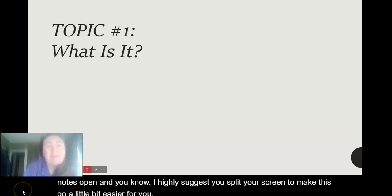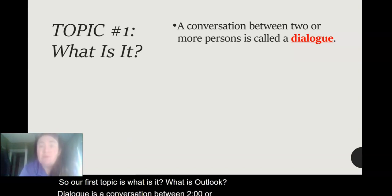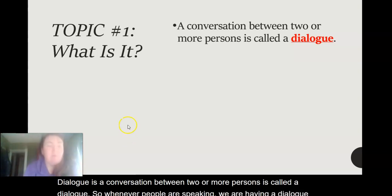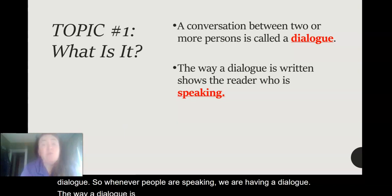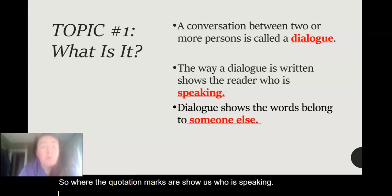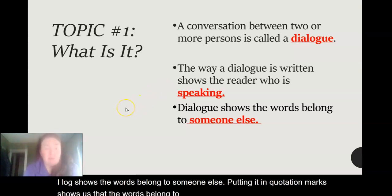Our first topic is: what is dialogue? Dialogue is a conversation between two or more persons. Whenever people are speaking, we are having a dialogue. The way a dialogue is written shows the reader who is speaking — where the quotation marks are shows us who is speaking. Putting it in quotation marks shows us that the words belong to someone else.